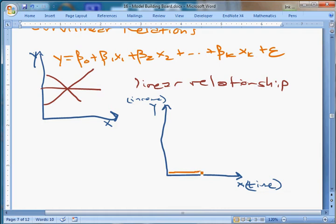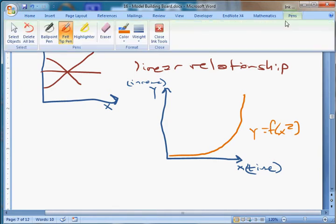And the truth is that there are lots of things that we think might not be related like this. Let's imagine that we have something that increases at an increasing rate, like the growth of human income over time. This is exponential, Y equals F, some function of X squared.